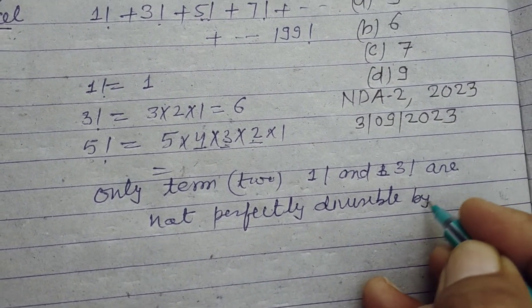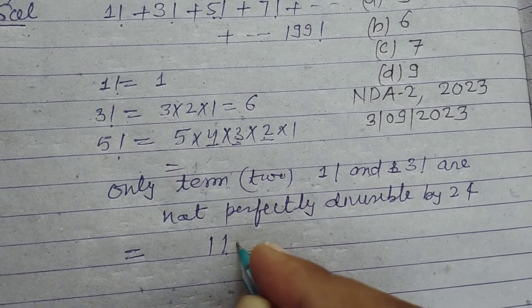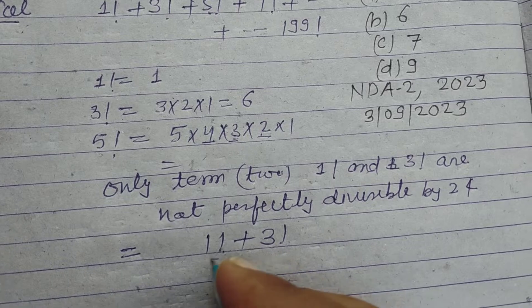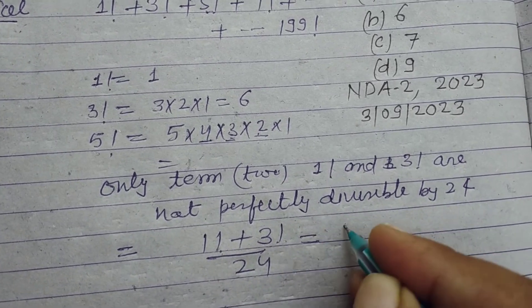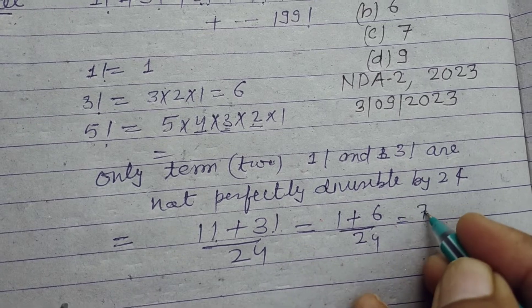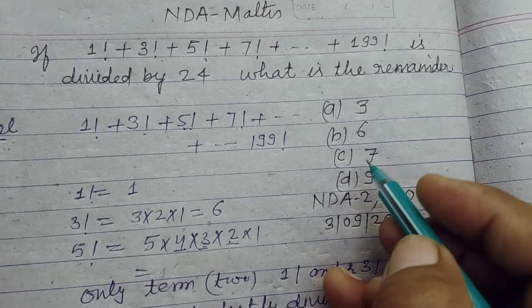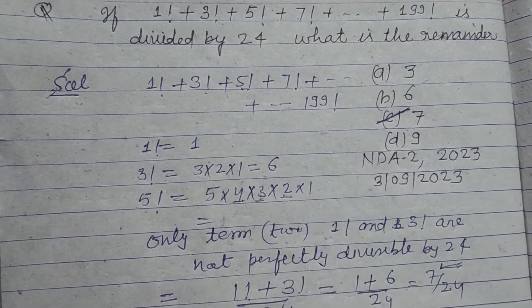Divisible by 24. Therefore, remainder is factorial 1 plus factorial 3 by 24, and this is 1 plus 6 by 24, this is 7 by 24. So remainder is 7. So answer of this question is C.